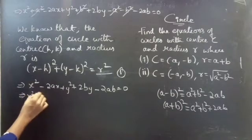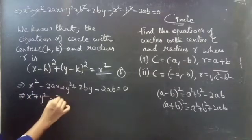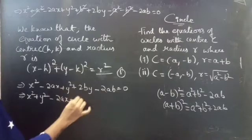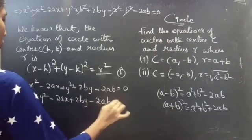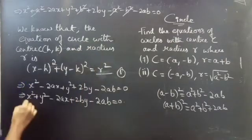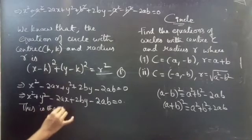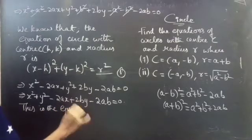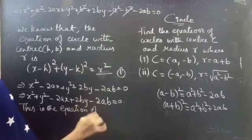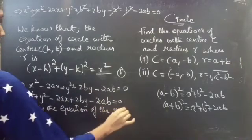We can rewrite this as x square plus y square minus 2ax plus 2by minus 2ab equals to 0. This is the required equation of the circle.